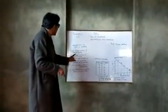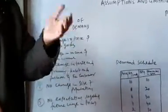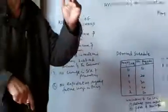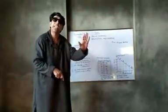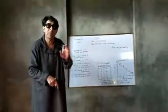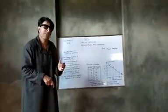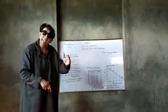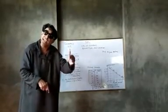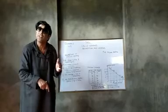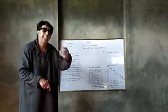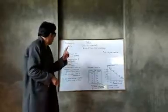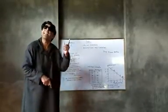The second assumption is no change in income of the consumer. The law is applicable only if there is no change in the income of the consumer. When income of the consumer increases, there will definitely be a change in the quantity demanded of the commodity, so it is necessary that income of the consumer should remain the same.